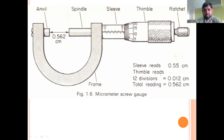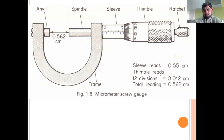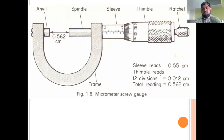Then look at the circular scale. In this example, line 12 is coinciding with the datum line. So 12 multiplied by the least count of the micrometer — which is 0.01 mm or 0.001 cm — gives a circular scale reading of 0.012 centimeters. The final reading is therefore 0.55 + 0.012 = 0.562 centimeters, or 5.62 mm.